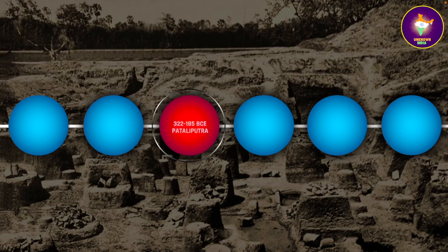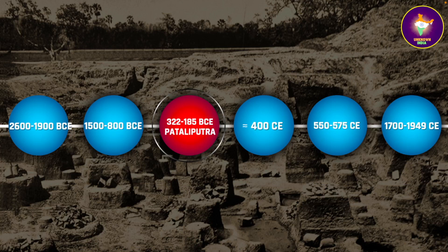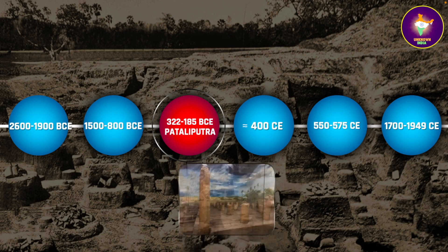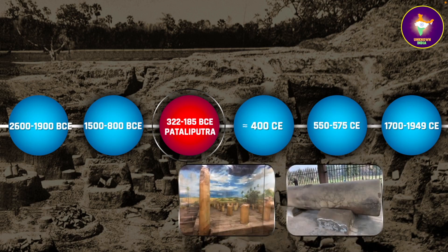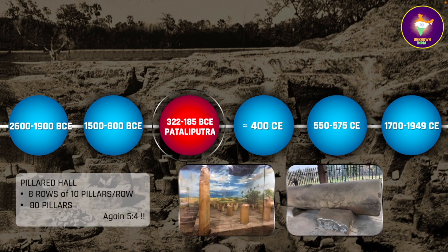Let us now travel forward in time to the Mauryan period of 322 to 185 BCE and land at Pataliputra, now known as Patna in Bihar. We have ruins of a pillared assembly hall here, just as in Mohenjo-daro, only on a much bigger scale. This hall had 80 pillars arranged in 8 rows of 10 pillars each — once again the ratio of 5 to 4, or 10 to 8. Some archaeologists conjecture this hall might have been used for Buddhist prayer meetings, but we do not know for sure.